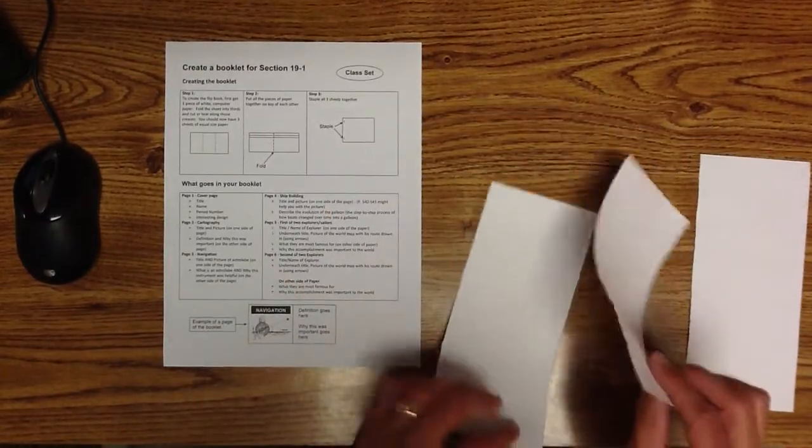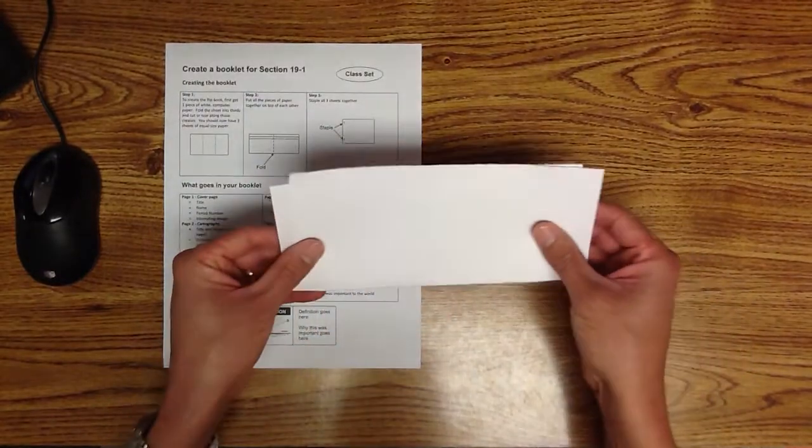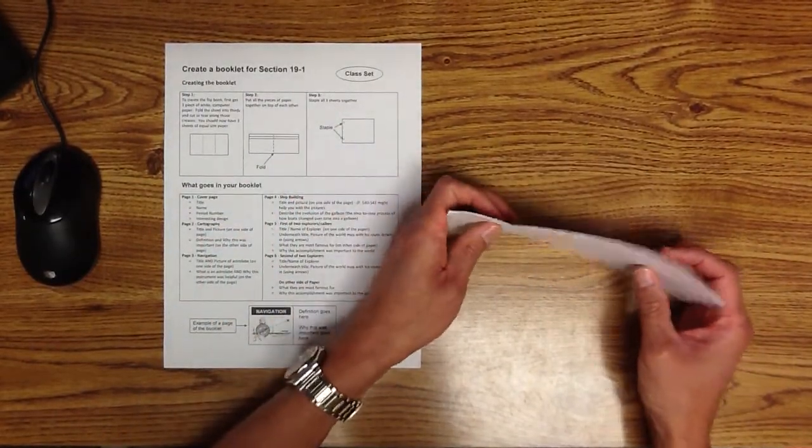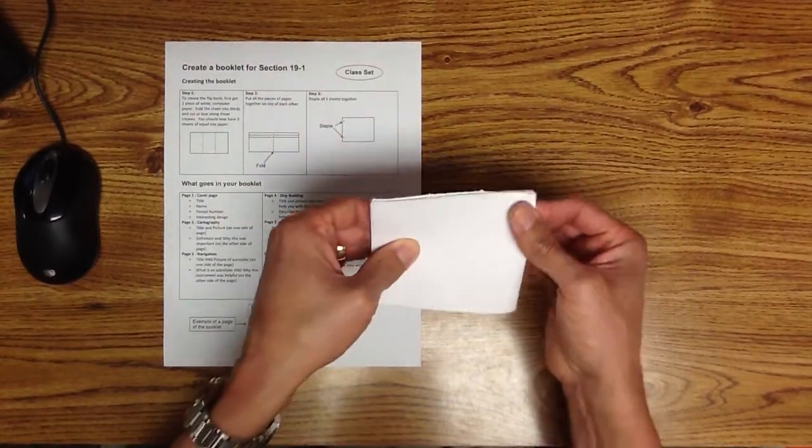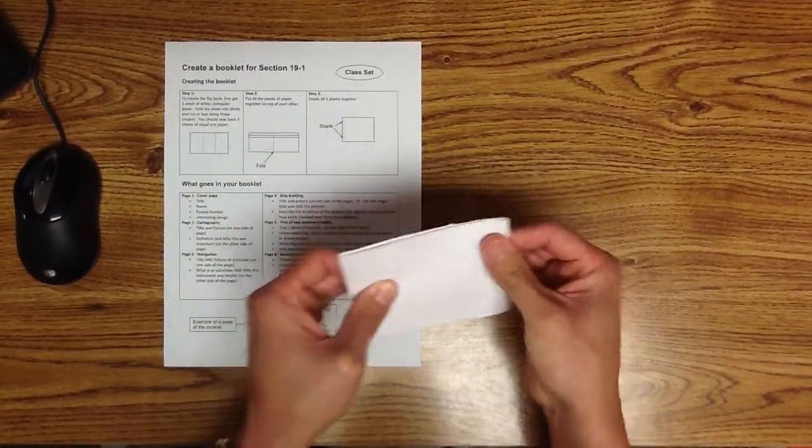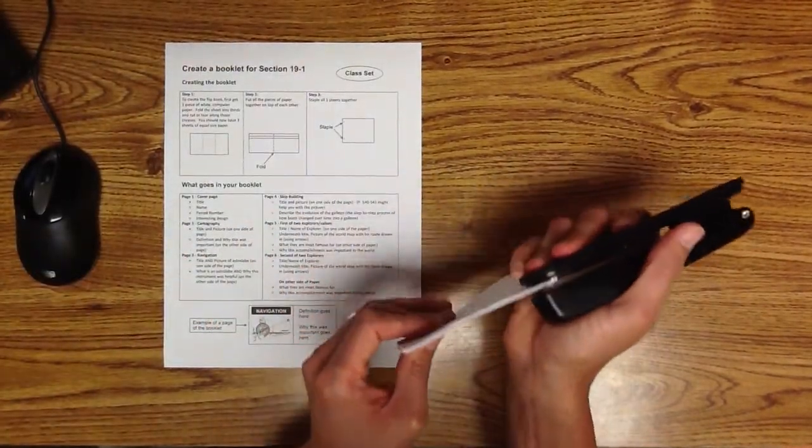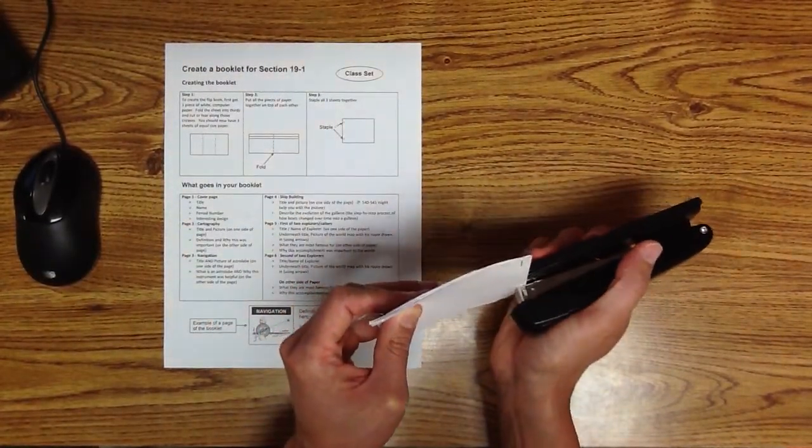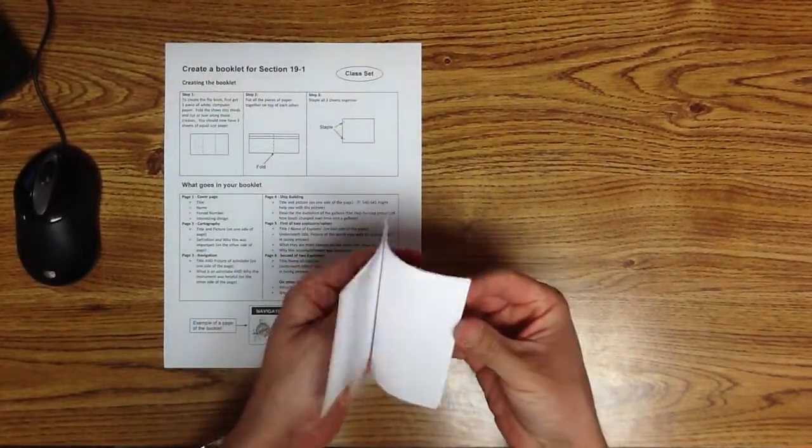Okay, and so what I'm going to do then is I'll take all three, stack them all on top of each other. Here they are. I'm going to stack them. Simply fold it over, fold it, get my stapler, staple it, and I've got my little booklet.